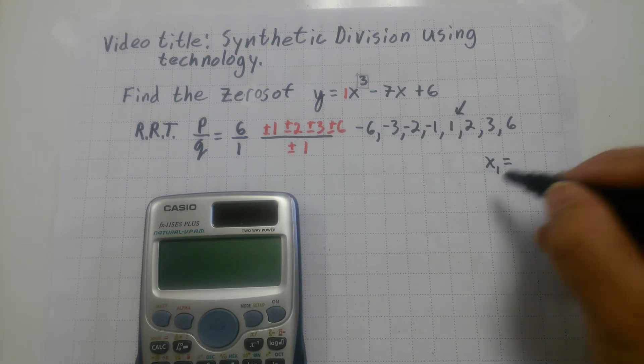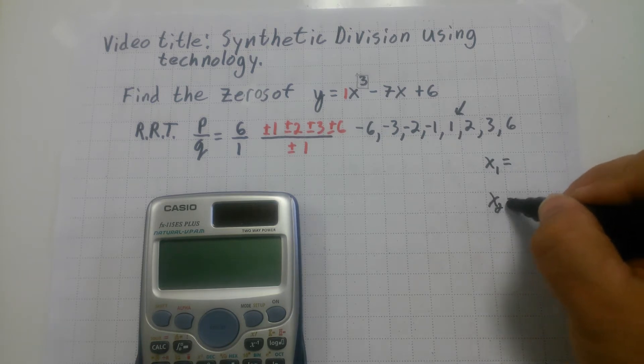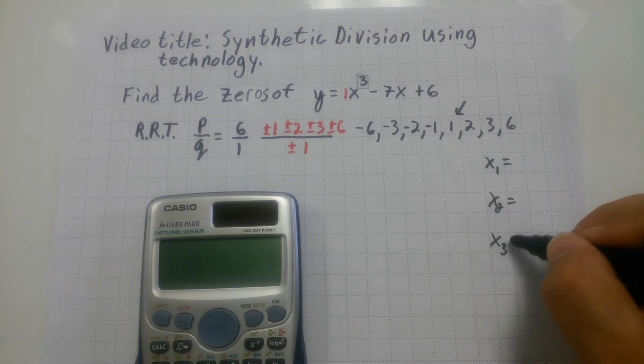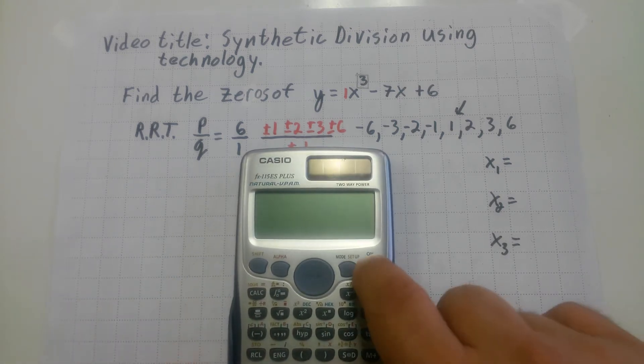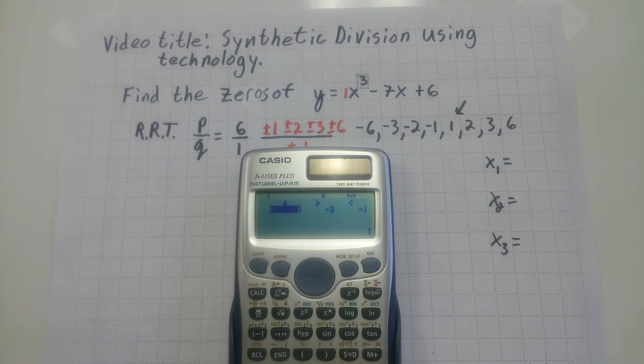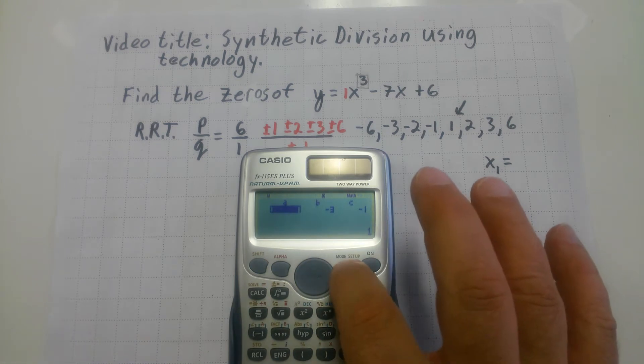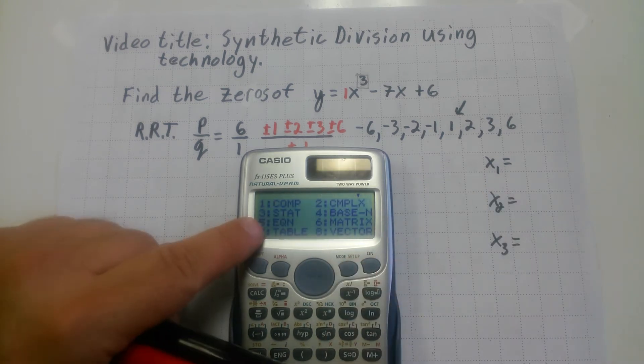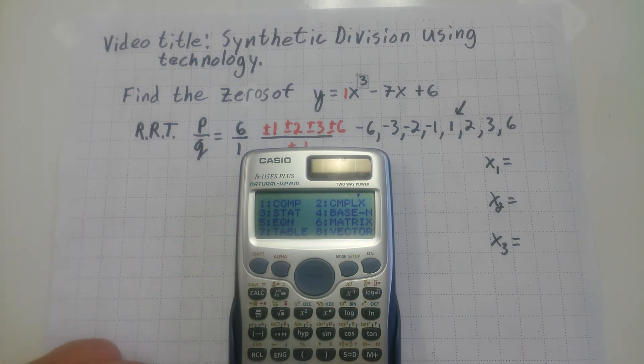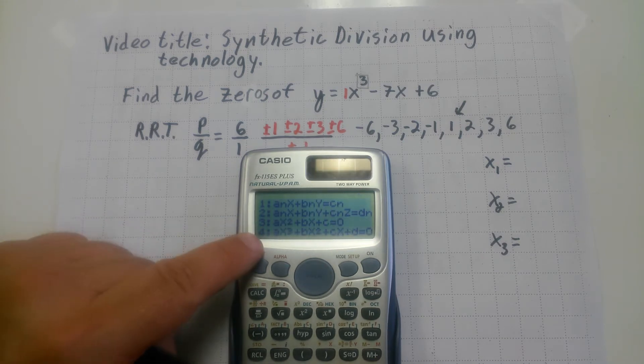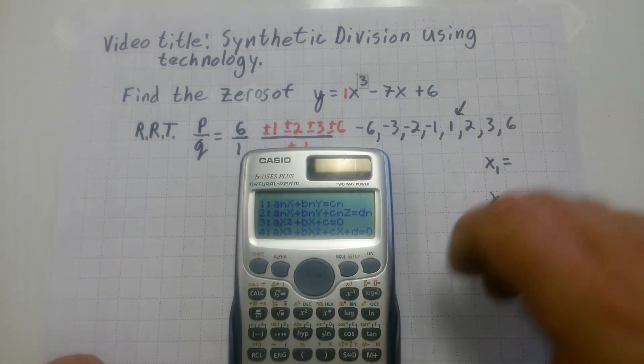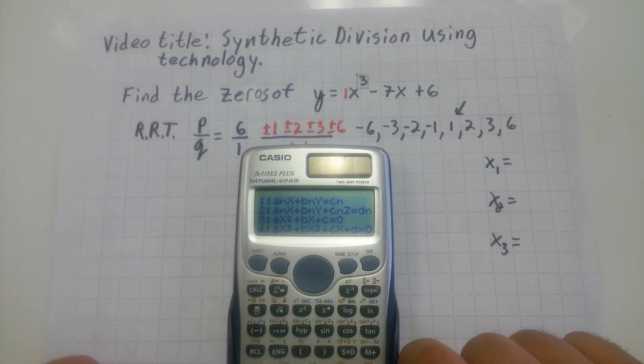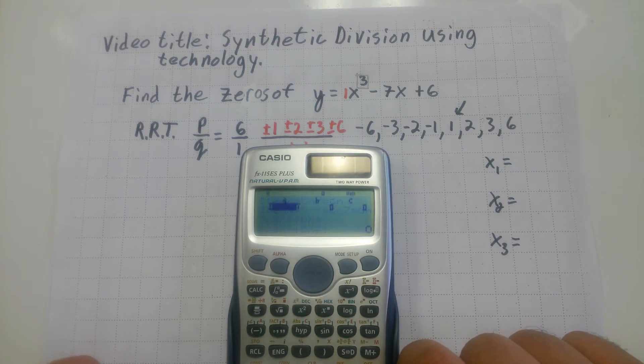I'm going to get those answers out of the way right now. X of one equals, X of two equals, and X of three equals. I'm not going to be rude, though. I'm going to show my work after I get those answers. First thing I want to do is turn this on. And then I'm going to hit mode, five for equation, and then four because it's an X cubed. That's the highest degree this particular calculator will solve. It has its limitations. So mode five, four.